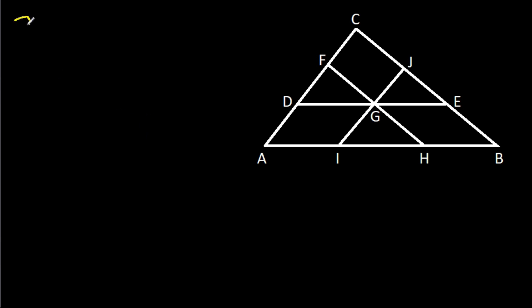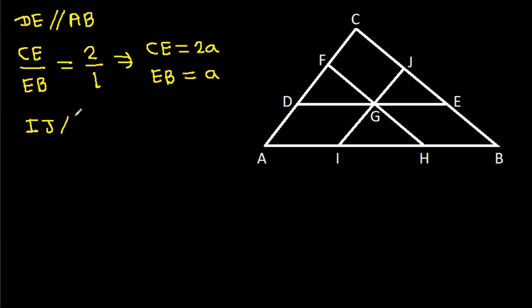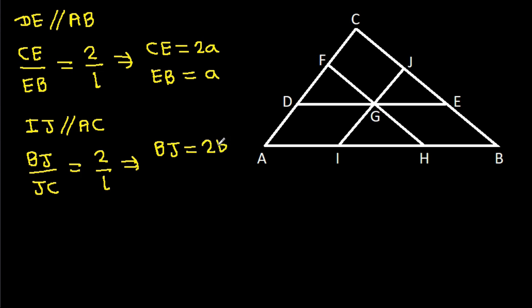We have DE parallel to AB, so CE/EB = 2/1. And we have IJ parallel to AC, which means BJ/JC = 2/1.